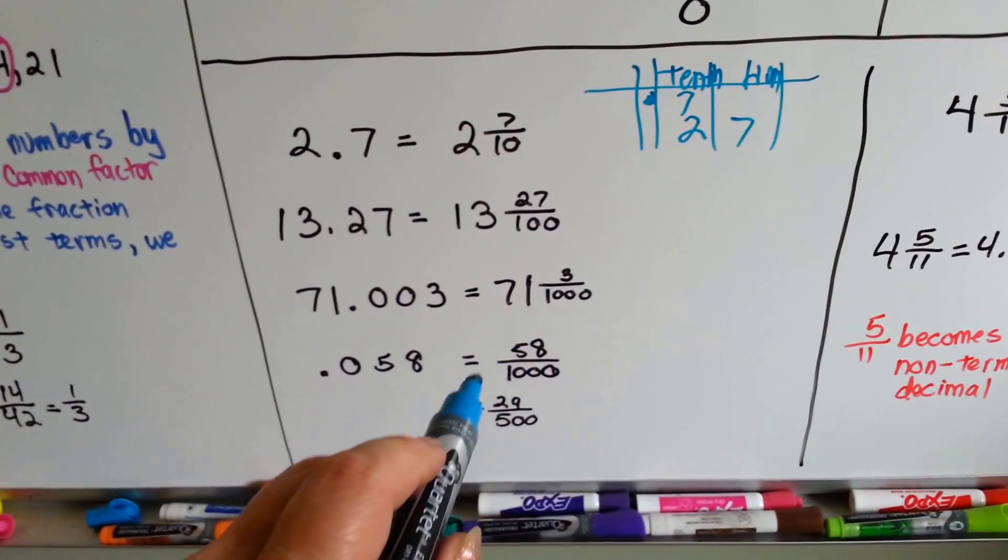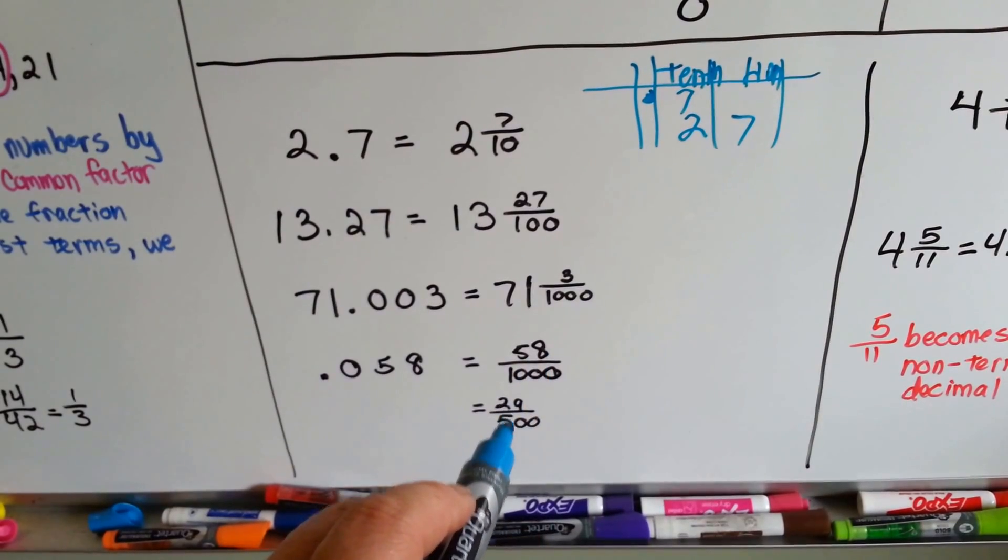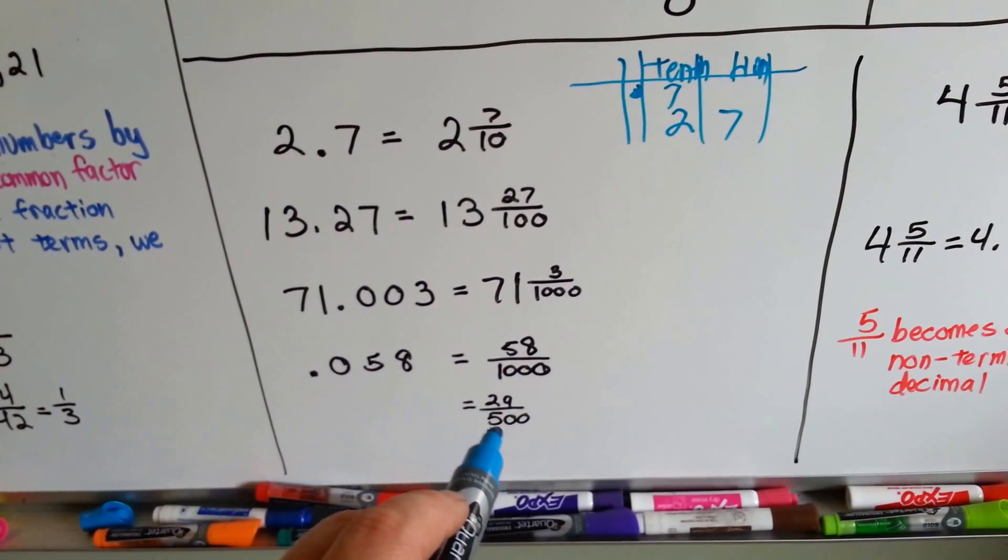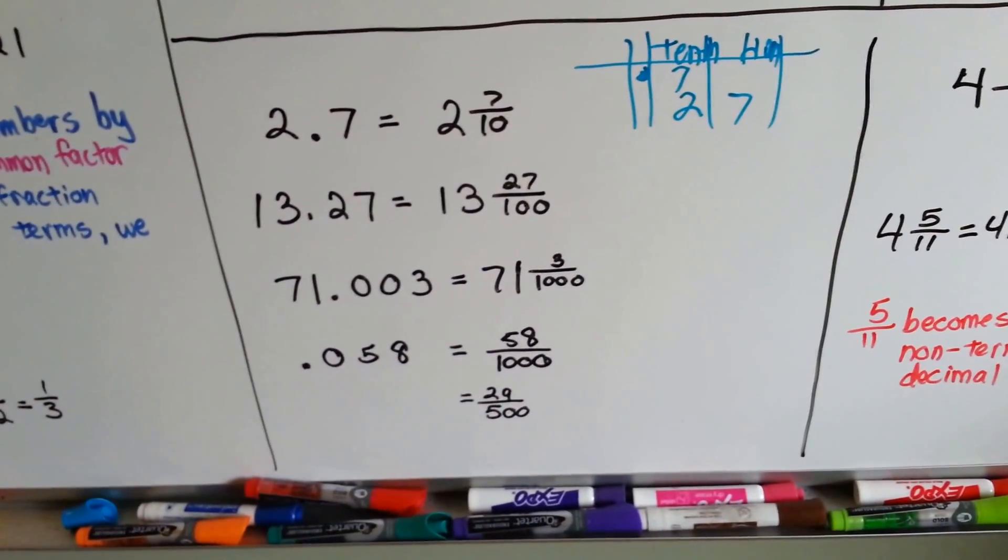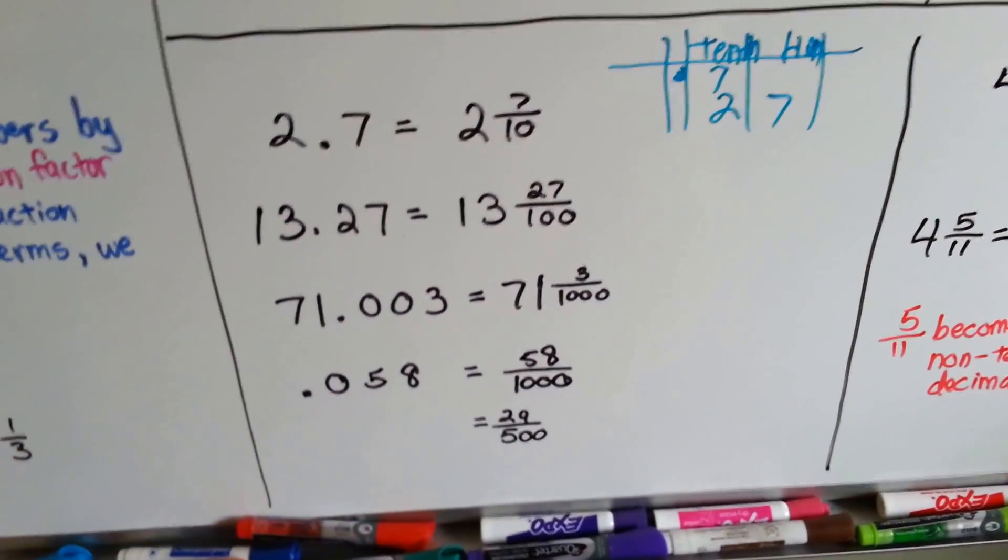I knew that half of 50 was 25 and half of 8 was 4, so I added 25 and 4 and got 29. And I put it over half of a thousand, which is 500. And I know 29 is a prime number, so that's as low as it's going to go. So that turned into 29/500 when it was reduced.